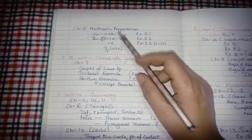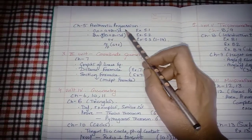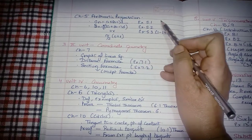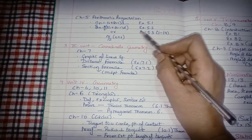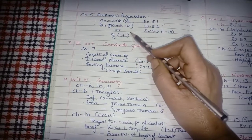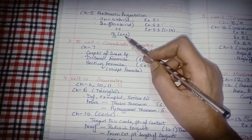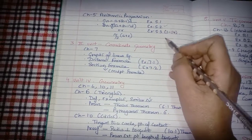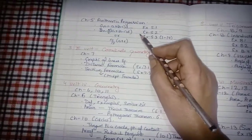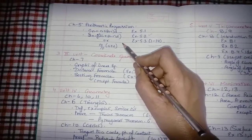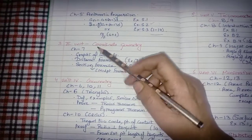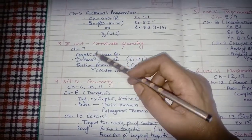For Chapter 5, Arithmetic Progression: prepare questions on the nth term (exercise 5.1 complete), exercise 5.2 complete, and from exercise 5.3 on sum of terms, prepare only questions 1 to 14. Worded problems from this chapter will not be asked, so do not prepare exercise 5.4 worded problems.